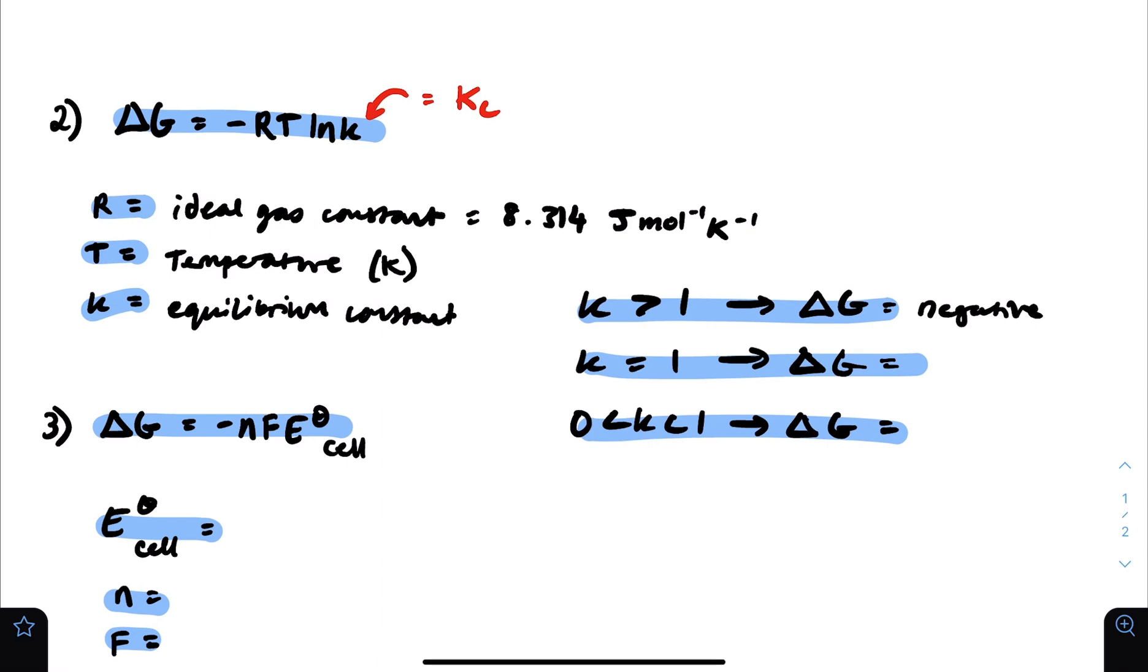Now, if K is equal to 1, ln K would equal ln 1, and ln 1 is 0. So delta G would equal 0. And therefore, it's neither spontaneous nor non-spontaneous. And then if K is less than 1 but greater than 0, obviously it can't be less than 0 just because ln of negative value is not possible to evaluate. But if it's in between this region, ln K would be negative. A negative times a negative is a positive value. And therefore, negative RT ln K would equal a positive value. So that would be a non-spontaneous reaction.